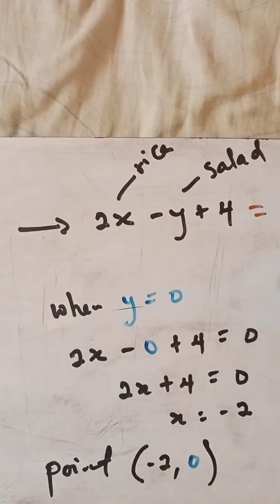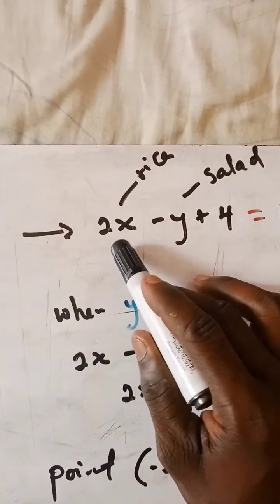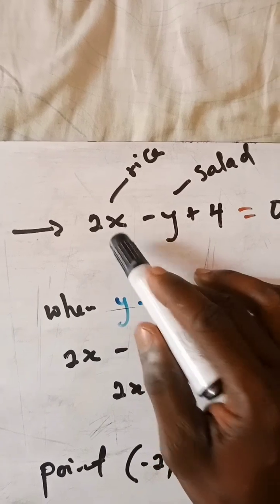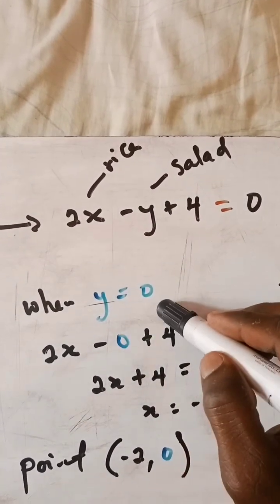Now if y is equal to zero, the idea is that you want to determine the value or the price of the rice here. So we are assuming that this guy doesn't exist, that's why we are setting that to equal to zero.